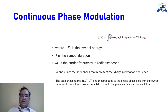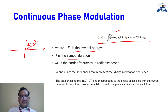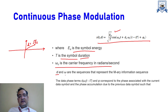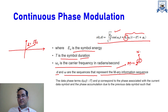In the CPM mathematical expression, Es is the symbol energy. If you plot a constellation diagram for CPM, the constellation distance d equals the square root of Es. T is the symbol duration, and omega_c is the carrier frequency in radians per second. The sequences d and omega represent the M-ary information sequence, where M-ary means 2^n, with n being the number of bits per symbol.